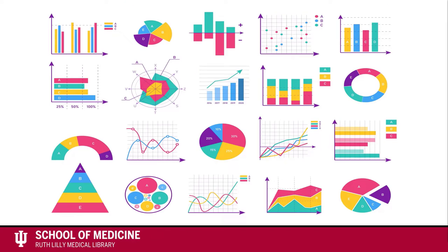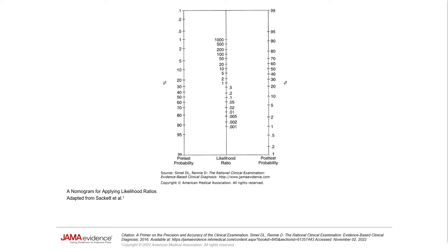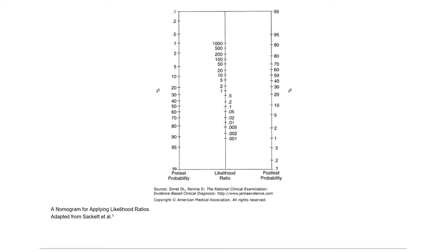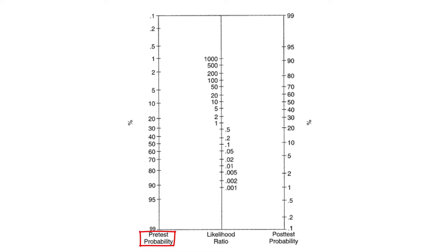Nomograms are used to display information graphically. In the most common form, a nomogram consists of three parallel graduated lines. Known values on any two scales determine a straight index line that passes through the solution value on the third line. The most used nomogram in evidence-based medicine is one developed by Fagin to move from a pre-test probability through a likelihood ratio to determine a post-test probability.